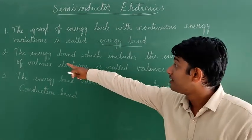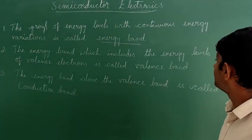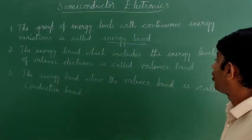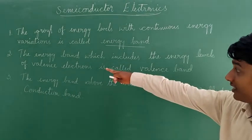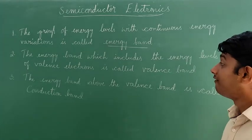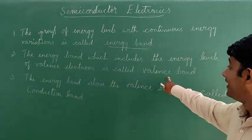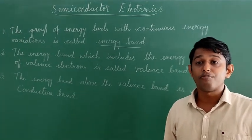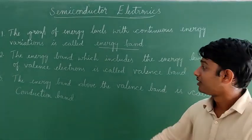The energy band which includes the energy levels of valence electrons is called the valence band. The valence band is occupied by valence electrons.